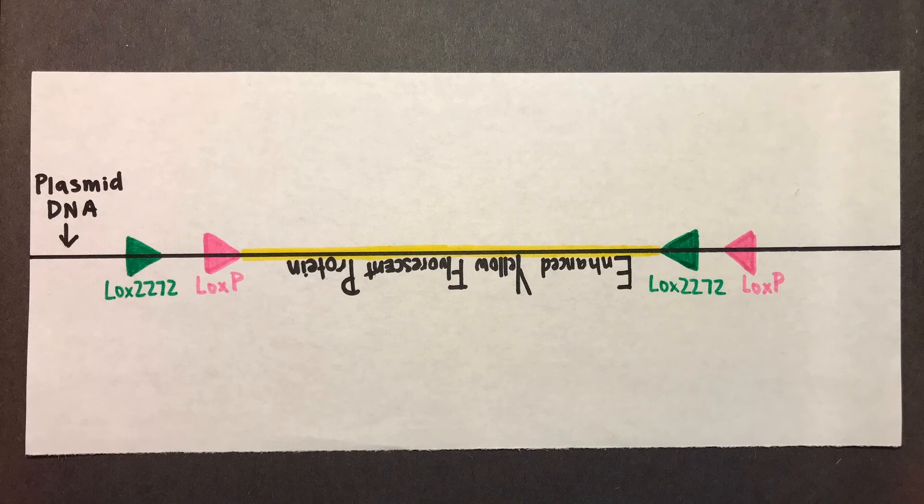So, here we have a section of bacterial DNA, which is called a plasmid, and lox sites surrounding our gene of interest.